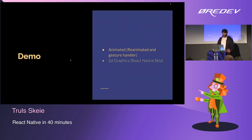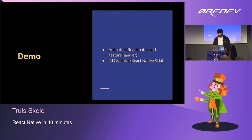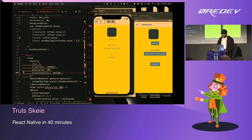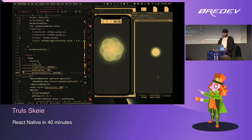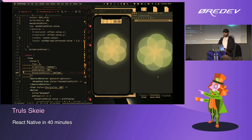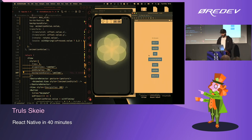The next example is some 2D graphics, done with a package called React Native Skia, sponsored by Shopify. Skia is the UI renderer that Google uses for Chrome and Flutter, and it's been ported to React Native. I haven't written the code I'm going to show — I've taken it from the Skia example package because it's quite complex.